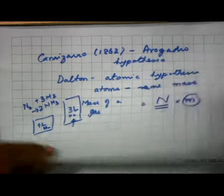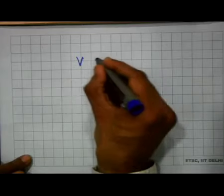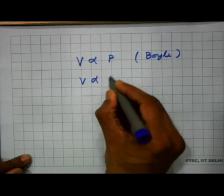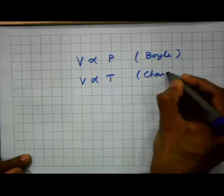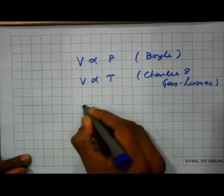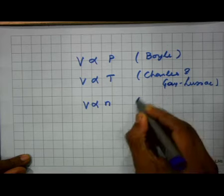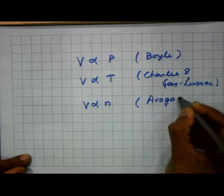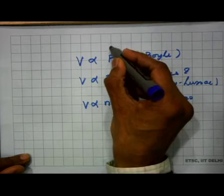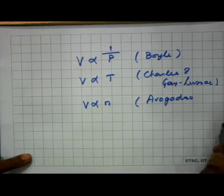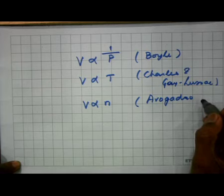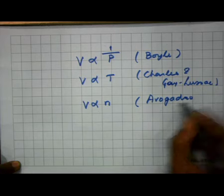So we have three things now: V is proportional to 1/P (due to Boyle), V is proportional to T (due to Charles and Gay-Lussac), and V is proportional to N (Avogadro's hypothesis).